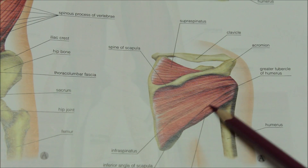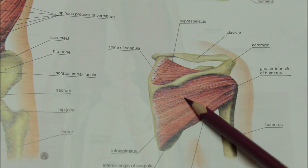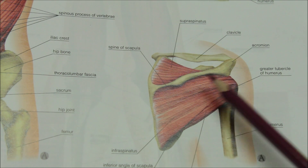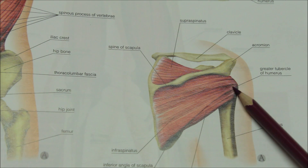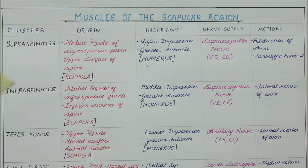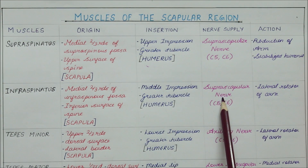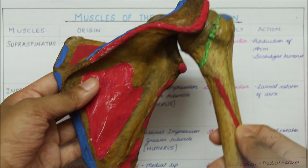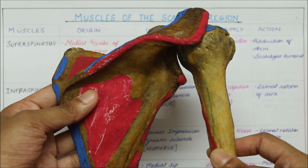This is the infraspinatus muscle. It originates from the medial two-thirds of the infraspinous fossa and the inferior surface of the spine of the scapula. It inserts into the middle impression of the greater tubercle of the humerus. Moving on to nerve supply, the infraspinatus is supplied by the suprascapular nerve, just like the supraspinatus. The action of the infraspinatus includes lateral rotation of the arm, as you can see here.